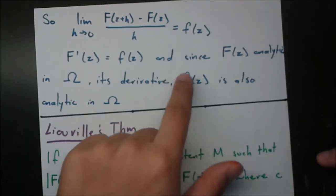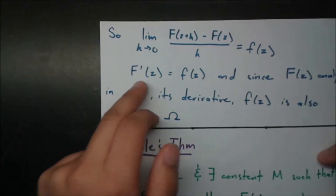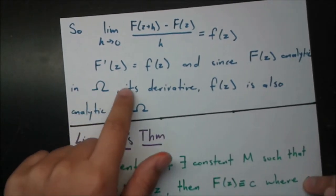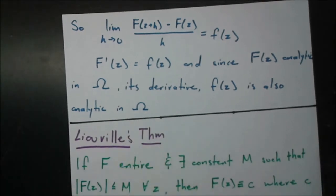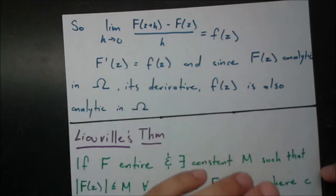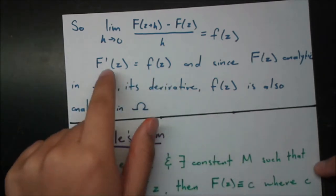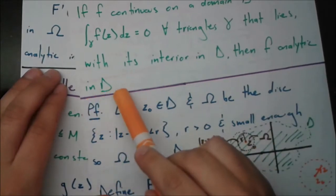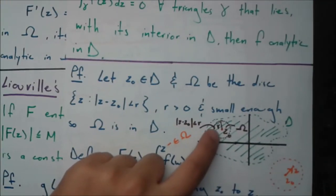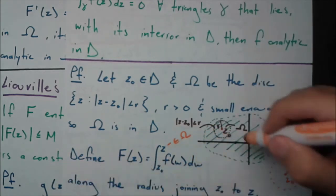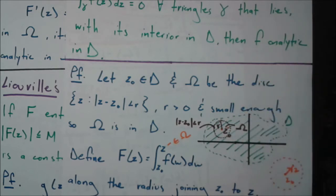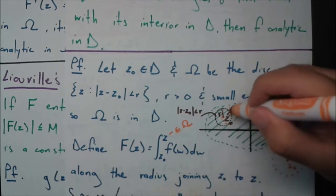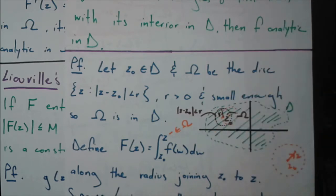Since big F(z) is analytic — we just found it has a derivative equal to f(z), which is continuous — then since it's analytic in omega, its derivative is also analytic in omega. We know that from the previous video: if something is analytic on a domain, it has a power series, and power series are always infinitely differentiable. So f(z) is analytic in omega. We can repeat this process with a new z₀ anywhere in D, covering the entire domain. Thus f is analytic in D.